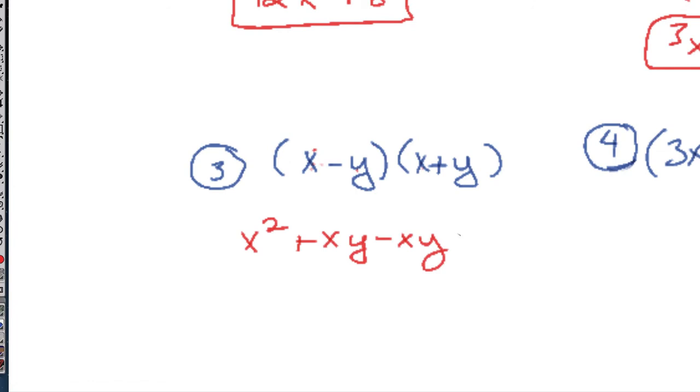And then minus y². What will always happen here is that middle term—one will be positive and the other one will be negative of the exact same thing. And you'll always be left with the square of the first and the second with a minus sign in between, hence the name difference of two squares.